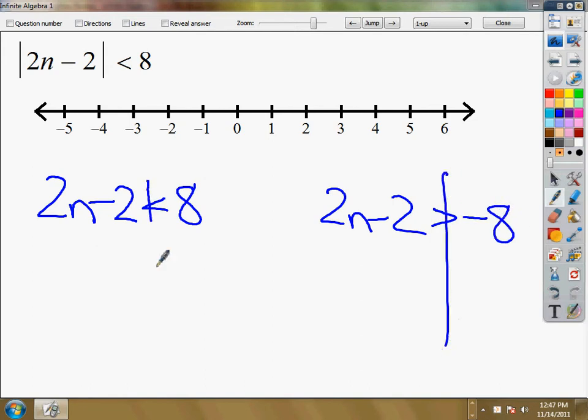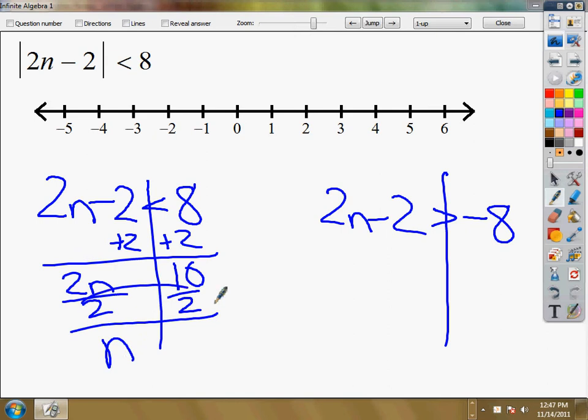And from here, I'm just solving equations. Add 2. I think it's 2n is 10. Divide by 2. This is a positive number, so I'm going to slide this down. n is less than 5.